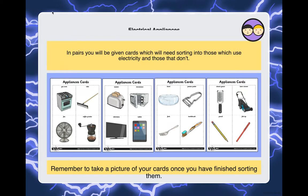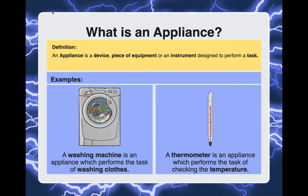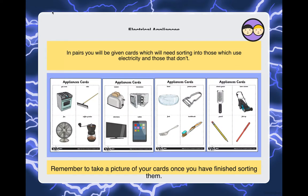Remember, an appliance is a device, piece of equipment, or instrument designed to perform a task. A thermometer is an example — a traditional thermometer does not use electricity, but a modern thermometer powered by a battery does use electricity. Take a look at the pictures and sort them out. This assignment will be posted right after the lesson.